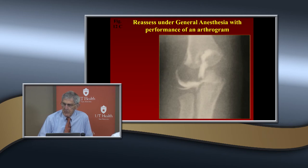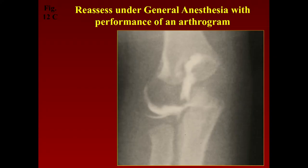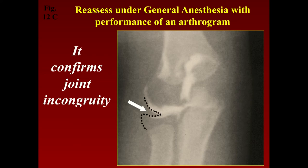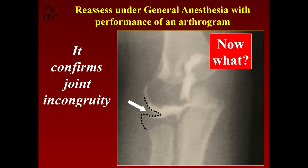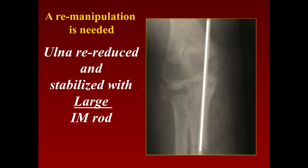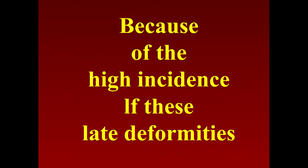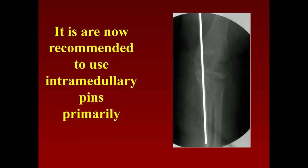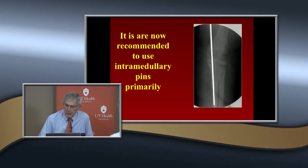The next step was to examine this patient under anesthesia. With an arthrogram you can confirm there's incongruity — it's not well aligned. So you have to re-manipulate it and stabilize it with a large intramedullary rod. Because of the high incidence of these late deformities in type 3, I now routinely put an intramedullary pin in there — usually a pretty good size one, a rush rod or a quarter-inch or three-eighths-inch pin.